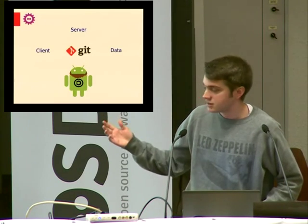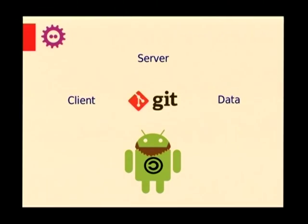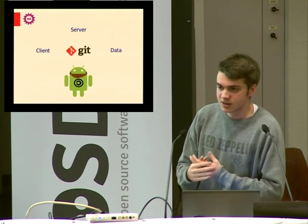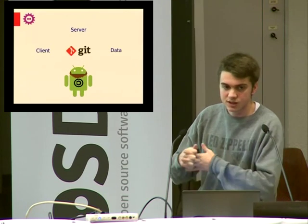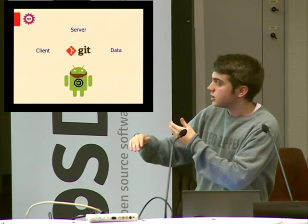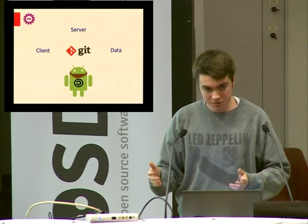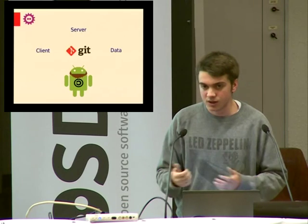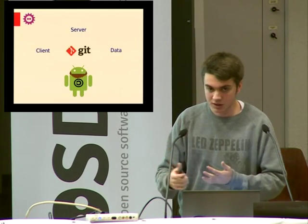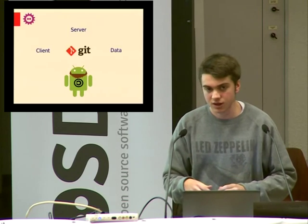So FDroid was based on Git — it's the easiest way to encourage community participation. We have three parts: the client, which was forked from Aptoide because they already had a working client for Android with a specification for an index in XML; the server, which is written in Python and basically manages applications, builds them and publishes them; and the data, which contains the recipes — information about each application like description and web page, but also how to build it, because all applications in FDroid, at least in the main repository, are built from source.